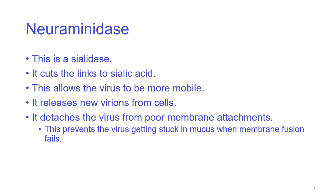Neuraminidase is the sialidase — it cuts the bonds between sialic acid and the hemagglutinin, allowing the virus to be mobile and move around. For example, if a virus docks on a cell where there's a lot of mucus and it can't get a good fix or is unable to fuse the membrane properly and enter the cell, it uses the neuraminidase to cut itself free and try again. Neuraminidase is also important for releasing virions from the outside of cells: as the new virus buds out of a cell, it binds through hemagglutinins to sialic acid receptors nearby, so neuraminidase is needed to free the virus particles to go to other cells.